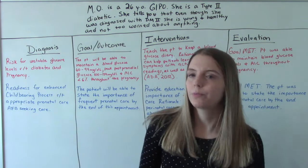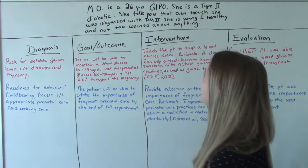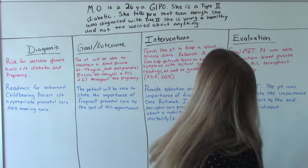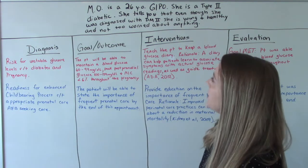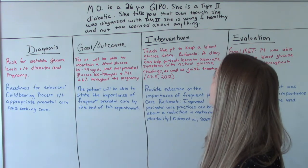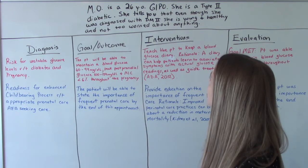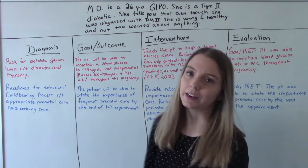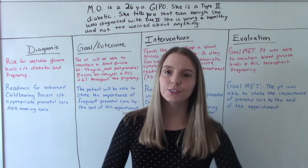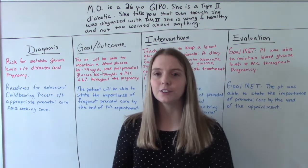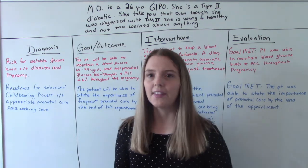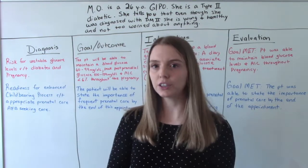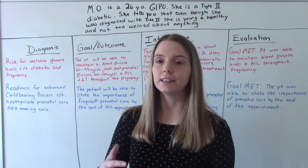We have M.O. She is a 26-year-old G1P0, so first pregnancy. She has type 2 diabetes. She tells you that even though she was diagnosed with diabetes, she is still young and healthy and not too worried about anything. So here you are seeing this patient at their first prenatal checkup, and you already know they have a comorbidity, so there's potential that their pregnancy might be complicated.